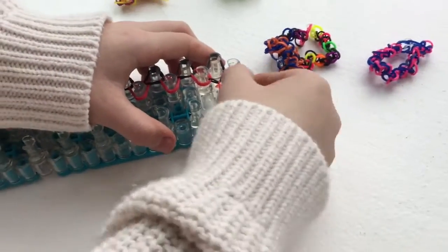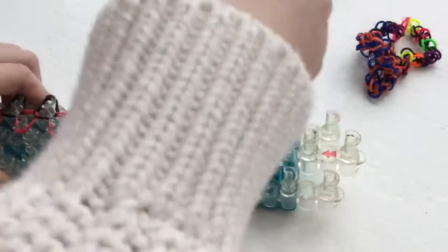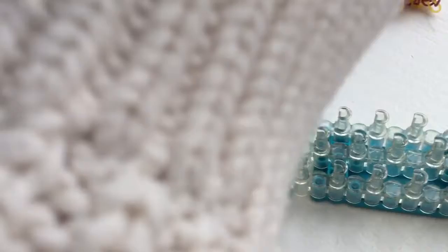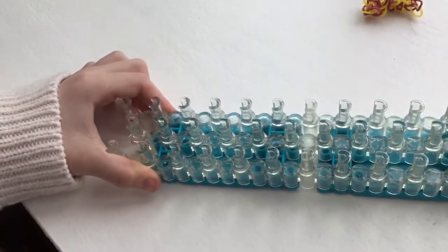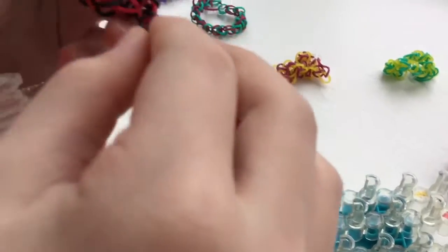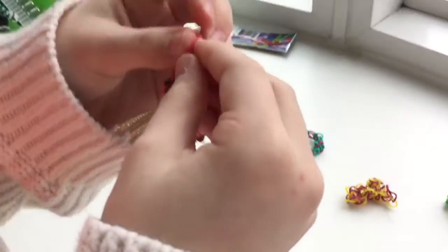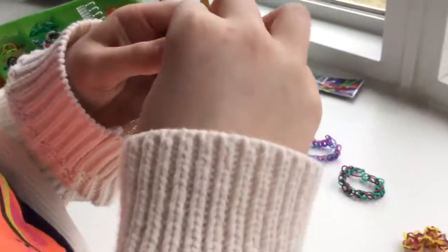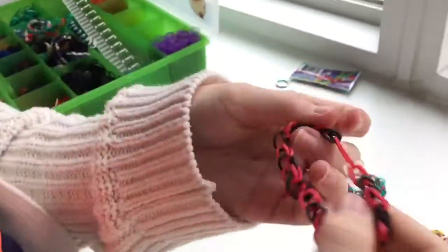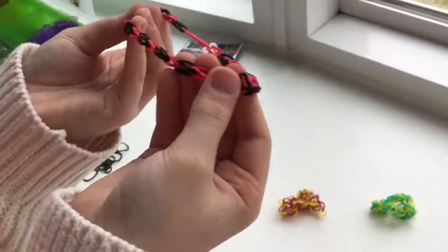Then what you're going to do is you're just going to pull it off when you're ready. And if it doesn't come out right, that means you didn't do something correct. But if it does just come out like this, then you did the right thing. Then you're going to take this loose one on the end and you're going to clip it to there. And there you go, you have a fishtail bracelet from the Rainbow Loom.